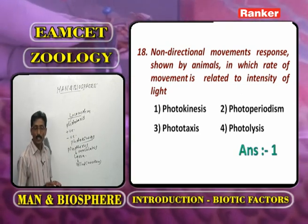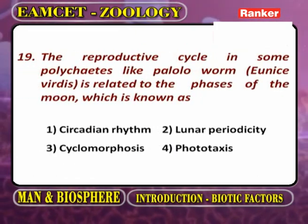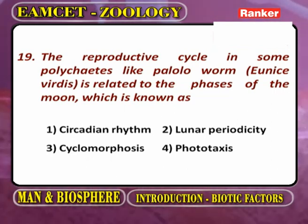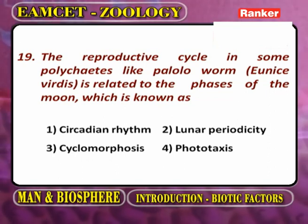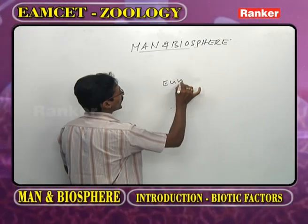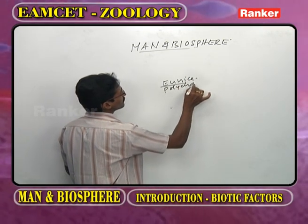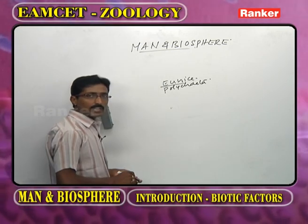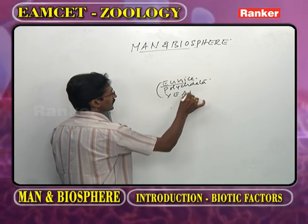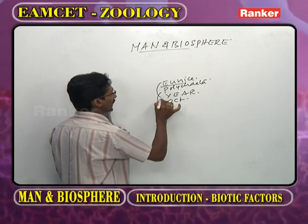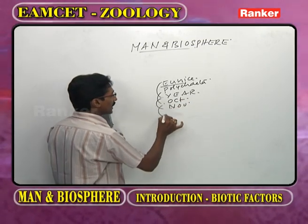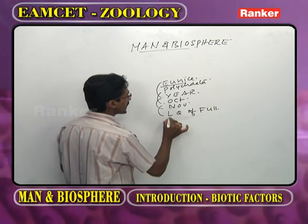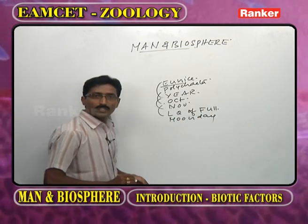The reproductive cycle in some polychaetes like the palolo worm, whose scientific name is Eunice viridis, is related to phases of the moon. This phenomenon is known as lunar periodicity.